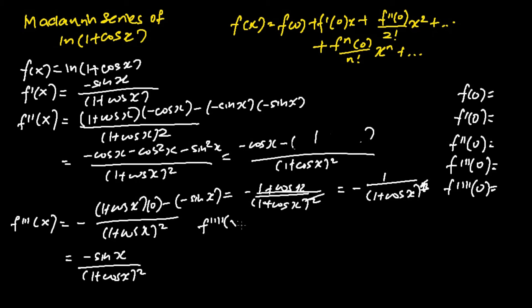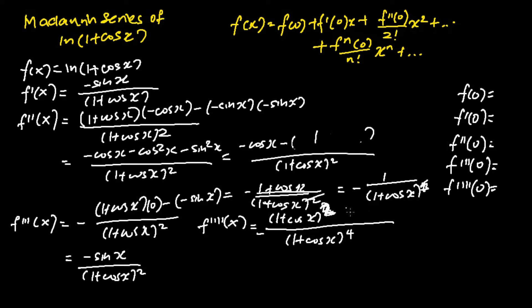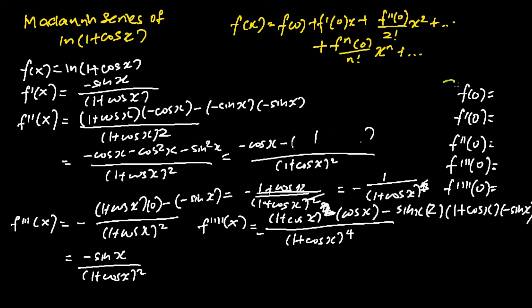For f four times prime x, this is a little more complicated, but we can still do it using the quotient rule. Squaring the denominator gives (1 + cos x)⁴. In the numerator, we have (1 + cos x)² times the derivative of sin x, which is cos x, minus sin x times the derivative of (1 + cos x)², which is 2(1 + cos x) times negative sin x. Once we find f(x), f'(x), f''(x), f'''(x), and f''''(x), we will evaluate these five values.